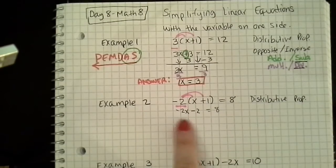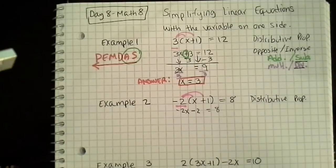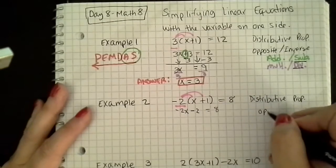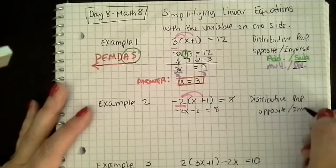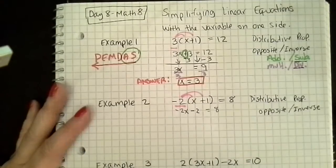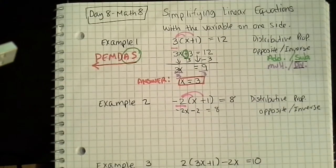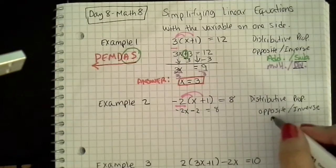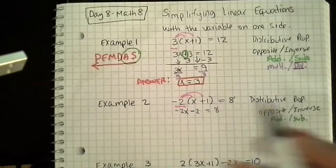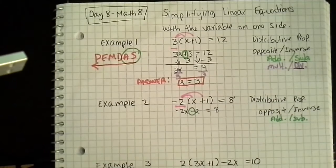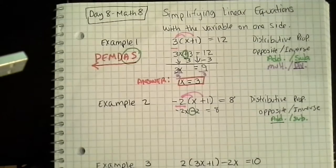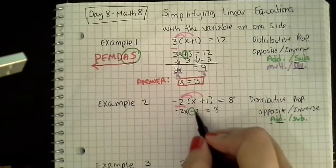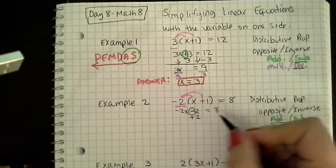Notice I don't have any like terms over here to combine, so I'm going to go ahead and use opposites already. And once more, I begin with my addition and subtraction. So I look at this — I have subtraction, so then I'm going to choose addition. So that means add the same amount to both sides. I'm going to add 2.